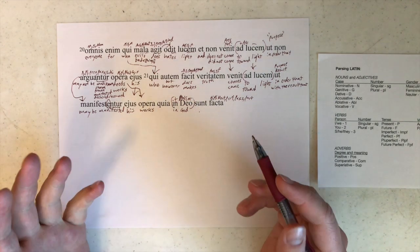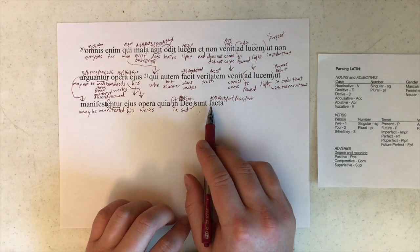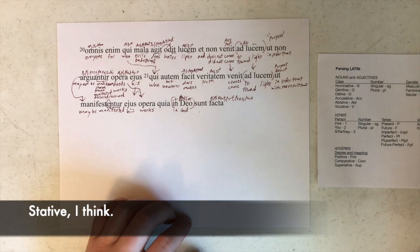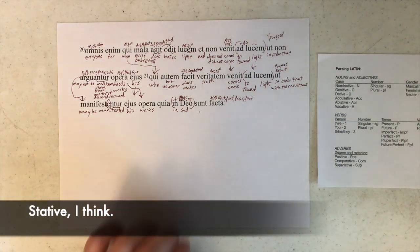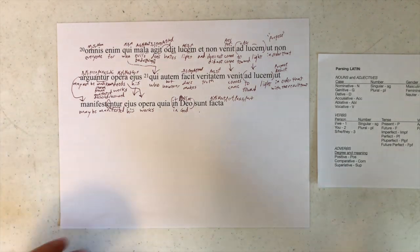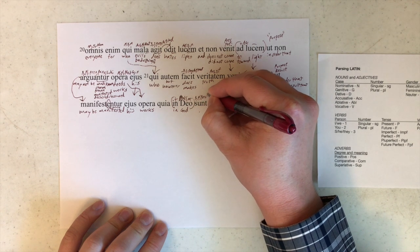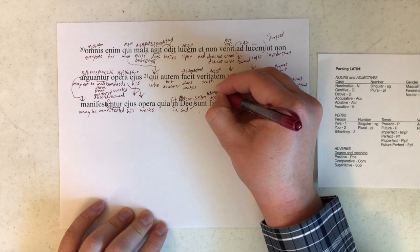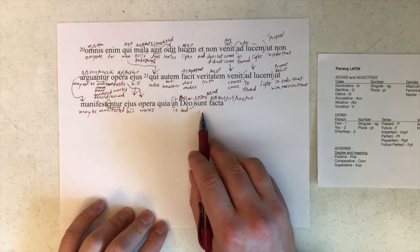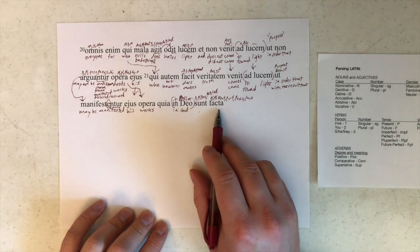So since we've got sunt appearing before facta, that means that something else must be going on. That must mean, at least I would think that would mean that sunt is not fulfilling the normal function with facta, and instead acting either as an indication of existence, whatever the proper term that is, or as a connecting of two things, a linking verb. So sunt itself is third person, plural, present, active, and indicative. So that they are done in god, or because they are done in god.